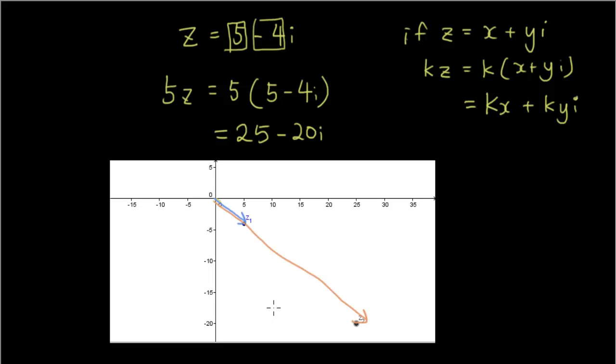...z2 is 5 times the length of z1. Okay, so that is the effect of multiplying by a scalar geometrically - we change the length of the line, it increases by a factor. Okay, thanks for watching guys, see you next time.